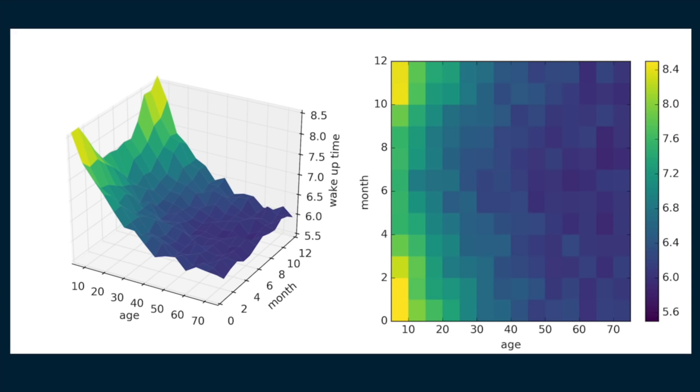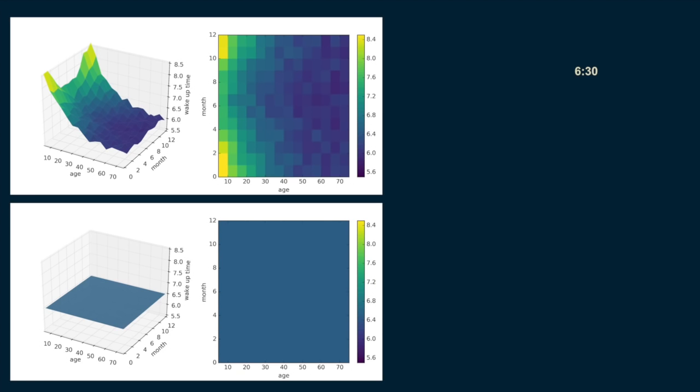We construct this decision tree much the same as the last one. We start with the root, a single estimate that roughly fits the entire dataset, 6:30. Then we look for a good place to put a decision boundary. We split the data on age 35, creating two halves, one for our under 35 population, with a wake-up time of 7:06, and one for our over 35 population, with a wake-up time of 6:12.